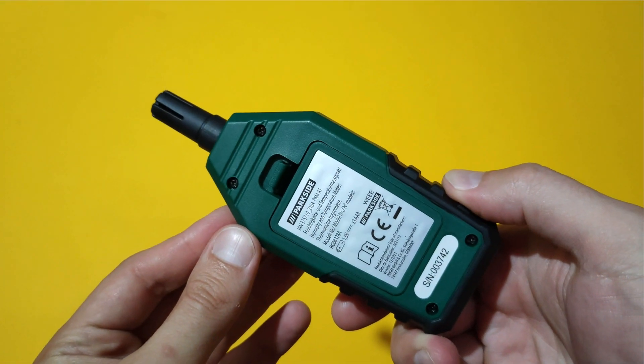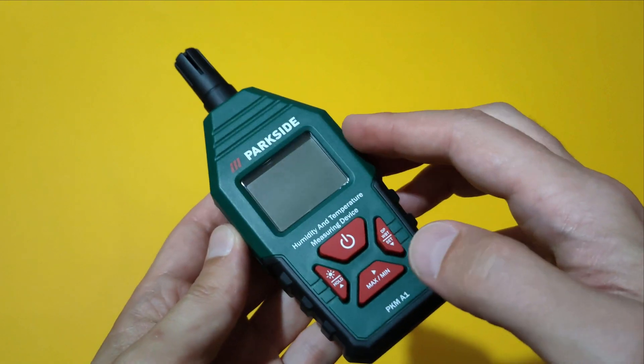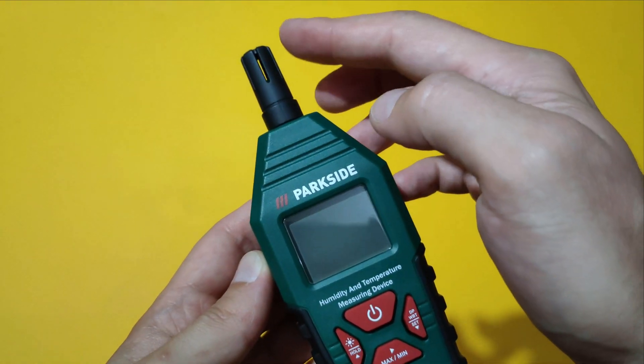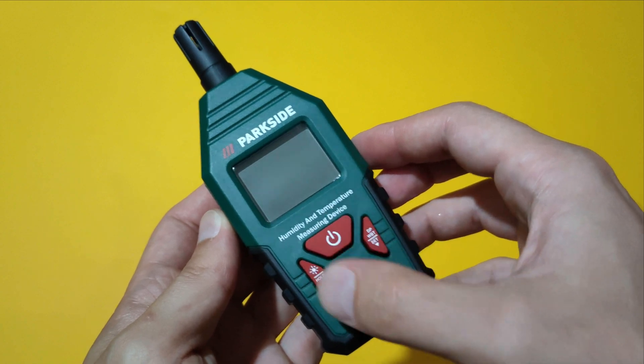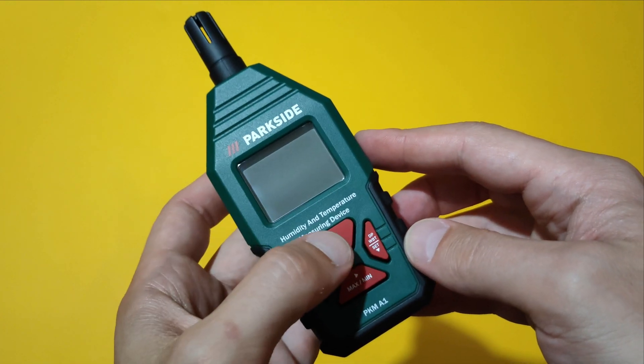This is how the device looks like. It's powered by three AAA batteries. The display is equipped with nice green backlight. This over here is the sensor head. We have four rubberized buttons. Let's start it.